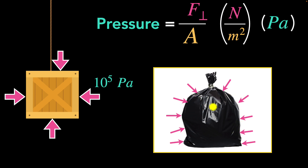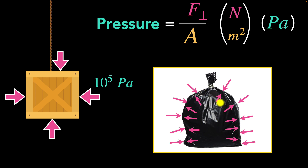The reason the plastic bag doesn't get crushed is because there's air inside as well, and that air has the exact same pressure — which means it balances out the pressure from the outside. But if you could somehow suck that air out, the balance would be lost because the pressure drops. Then we would see the plastic bag collapsing, getting crushed under the pressure from the outside. That all makes sense.